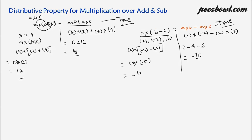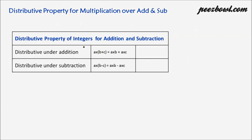You can try this property with more examples and more integers to find out whether this property holds. This property holds good for both addition and subtraction. To summarize: distributive property under addition states that a multiplied by b plus c equals a multiplied by b plus a multiplied by c — this is true. Similarly for subtraction — this is also true. So distributive property for multiplication over addition and subtraction both holds. Thank you for watching.